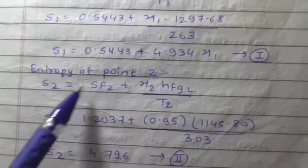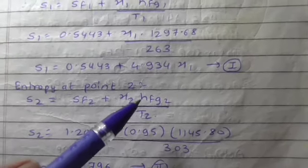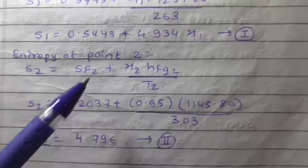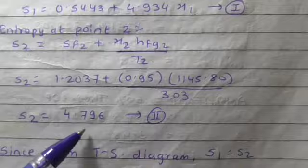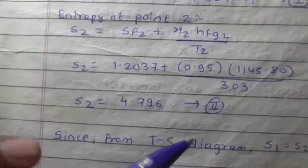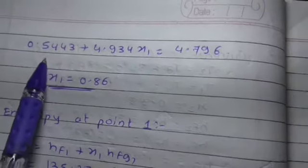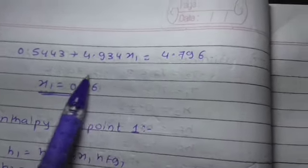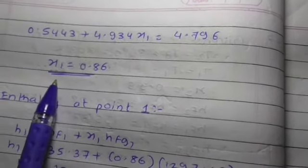Entropy at point 2: S2 equals SF2 plus X2 times HFG2 divided by T2. X2 is 0.95, so we get S2 as 4.796, which is equation number 2. Since from TS diagram S1 equals S2, we get 0.5443 plus 4.934 X1 equals 4.796, so X1 equals 0.86. This is the dryness fraction at point 1.